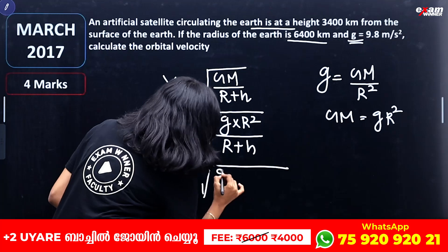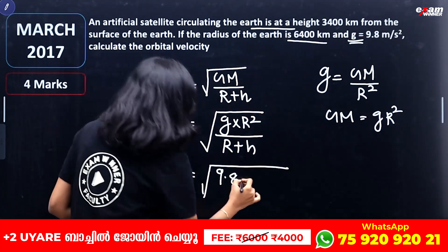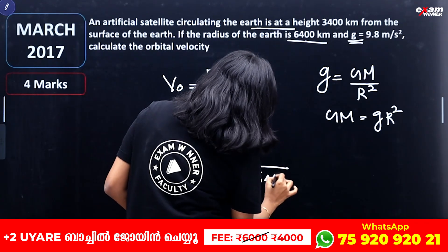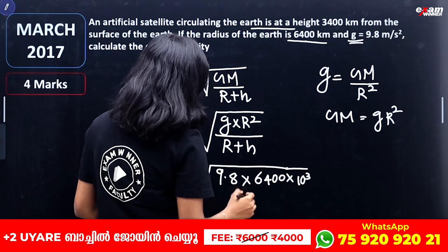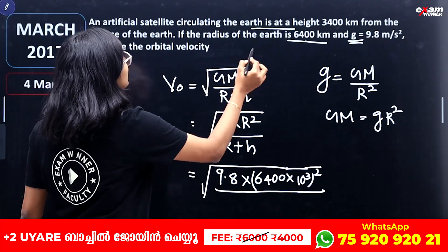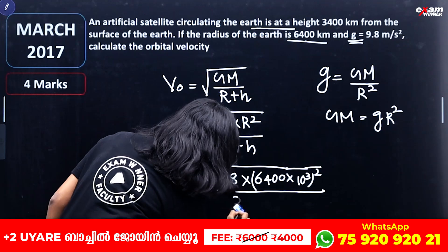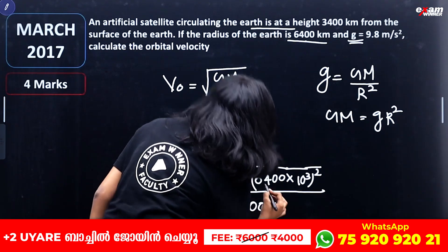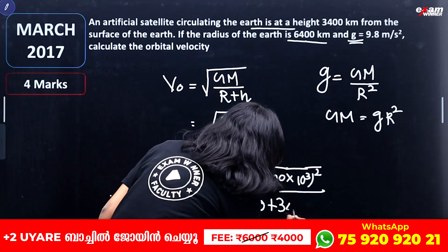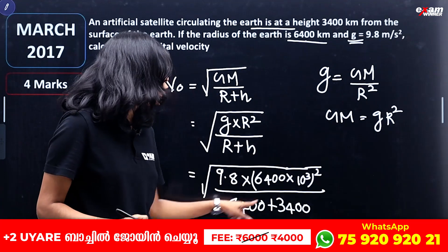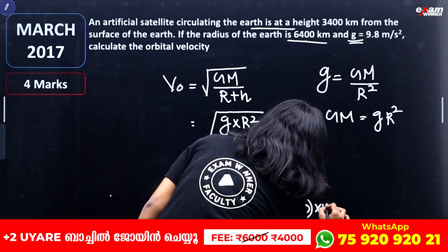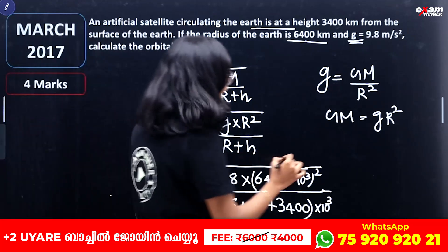Since g = GM/R², we get GM = gR². So orbital velocity v = √(gR²/(R+h)). With g = 9.8, R = 6400 km = 6400 × 10³ m, and R + h = 6400 + 3400 = 9800 km = 9800 × 10³ m. Substituting: v = √(9.8 × (6400 × 10³)² / (9800 × 10³)). We will now solve all these calculations.